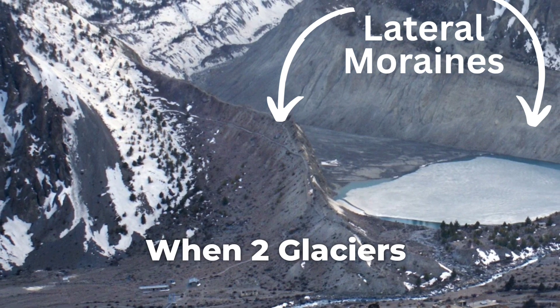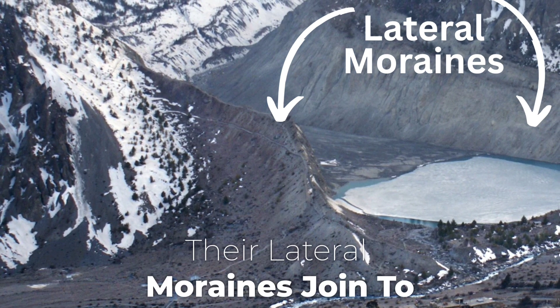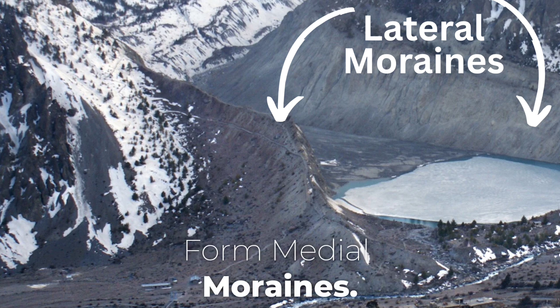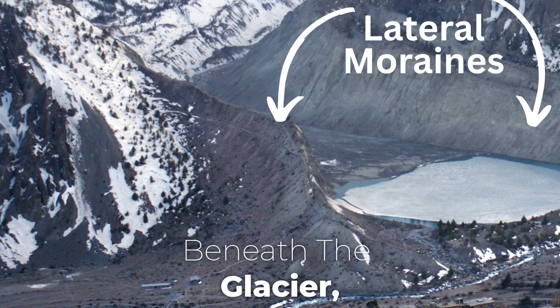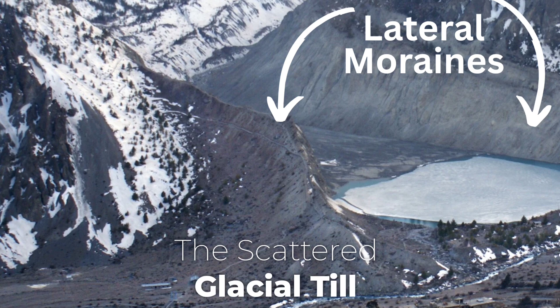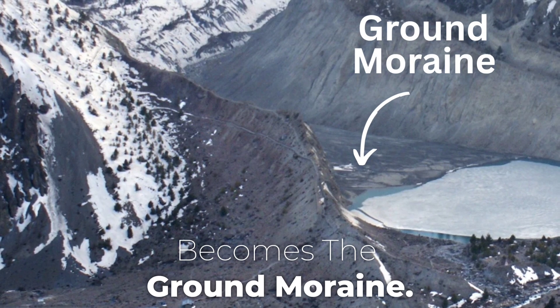When two glaciers merge, their lateral moraines join to form medial moraines. Beneath the glacier, the scattered glacial till becomes the ground moraine.